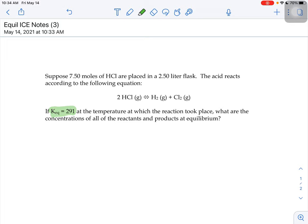So we first need to find the initial molarity of our hydrochloric acid. Since we are using 7.5 moles and we're putting it into a 2.5 liter flask, the molarity of my hydrochloric acid to start is 3 molar.